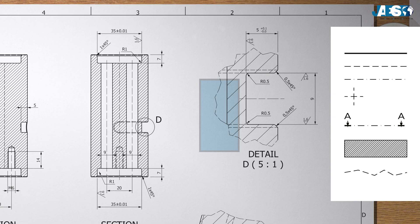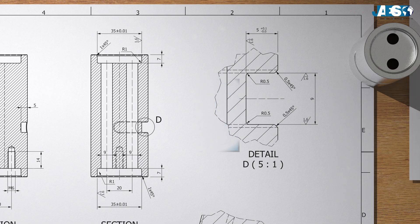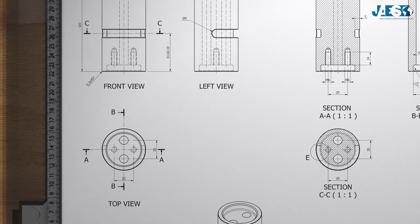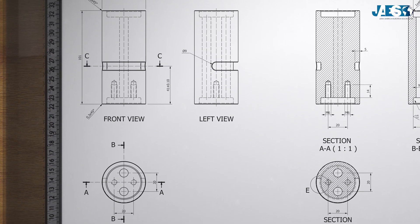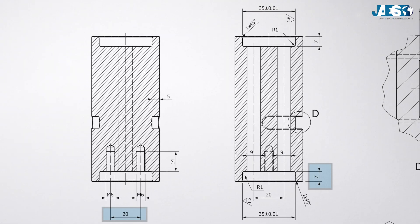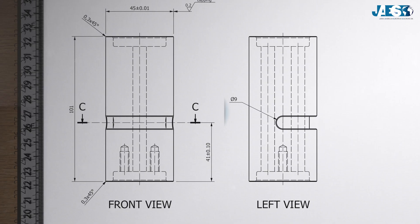Dimensionings, on the other hand, are represented through thin continuous lines which, placed side by side with numerical values, can indicate lengths of the various parts of the object, fillets if the letter R is present, diameters if the symbol phi is present.